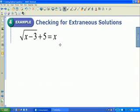We start out with the square root of x minus 3 plus 5 equals x. What I'm going to do to start out with is I have to get the radical by itself, so I'm going to subtract 5 on both sides to leave me with the square root of x minus 3 equals x minus 5.